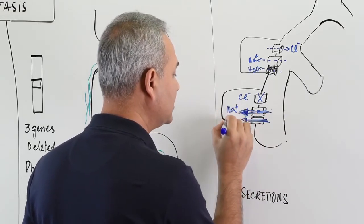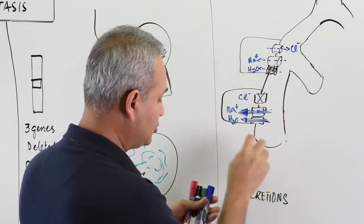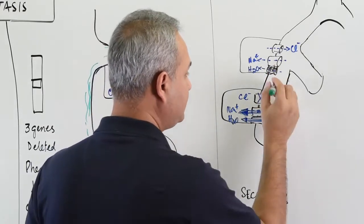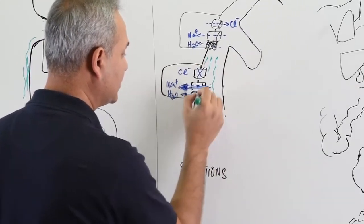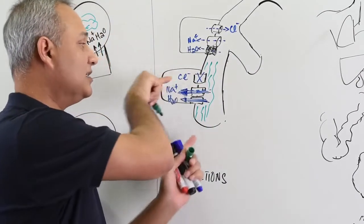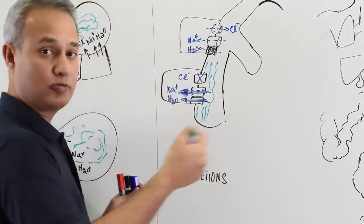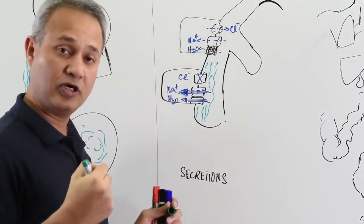More sodium comes in, that means more water comes in. What do you think is going to happen to the secretions now? This secretion that was present here, we have pulled out a lot of ions from it. We failed to give it chloride, so already ions are less. Now we are pulling out more sodium, which will cause more water to be pulled down.